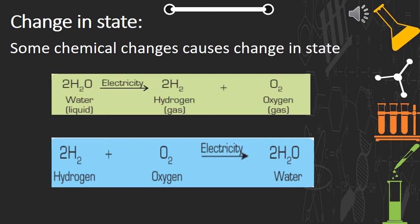In the second example, when hydrogen gas combines with oxygen gas, water is formed — two gases turn into a liquid. Electricity is an important condition for this reaction to occur. In both reactions we can see the change in state.